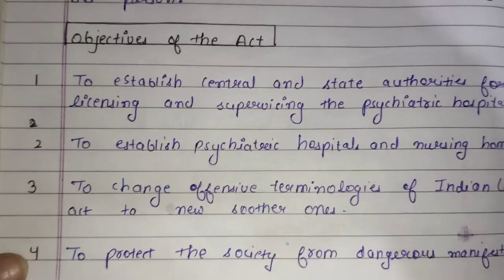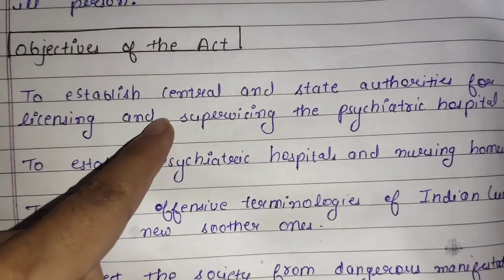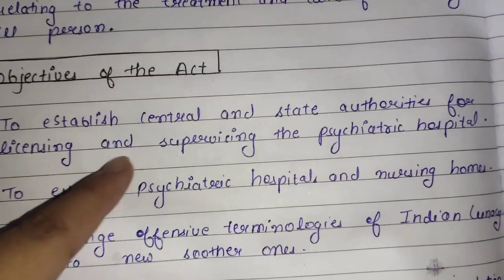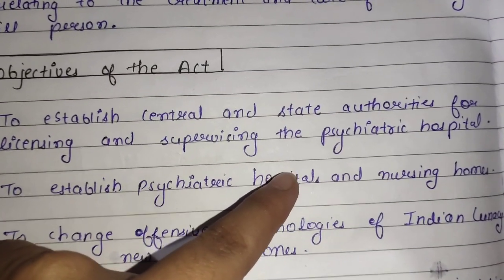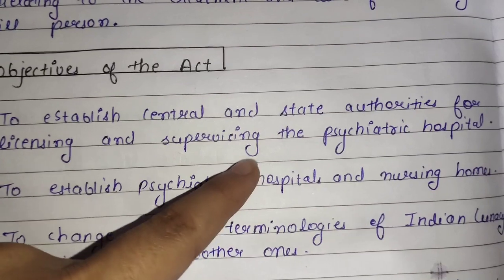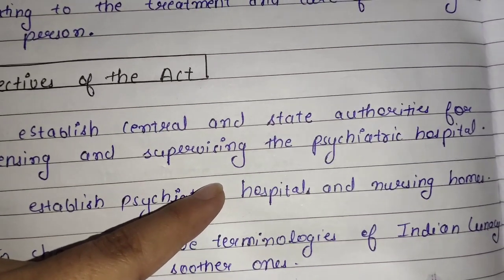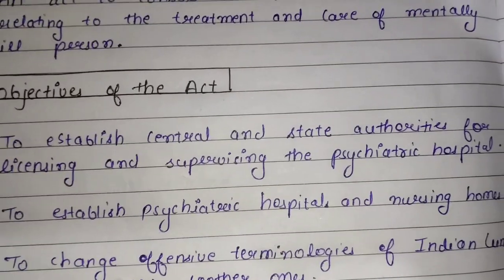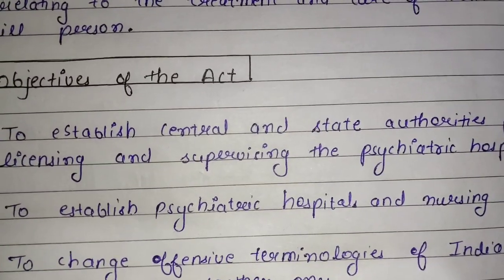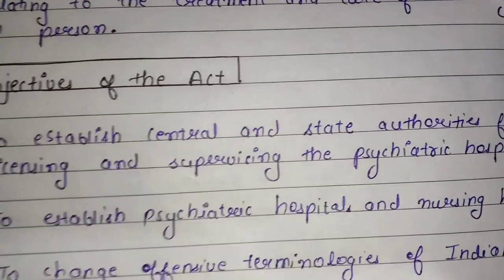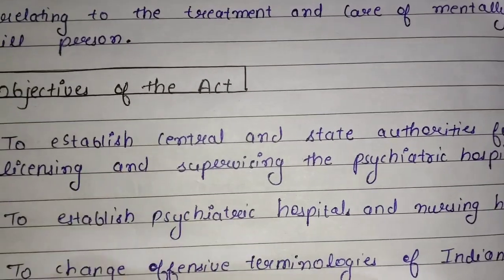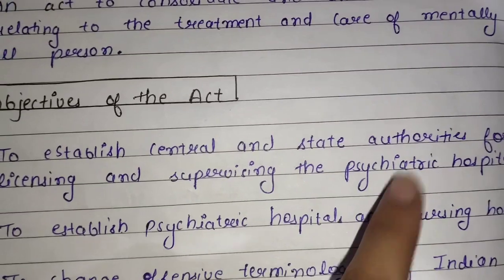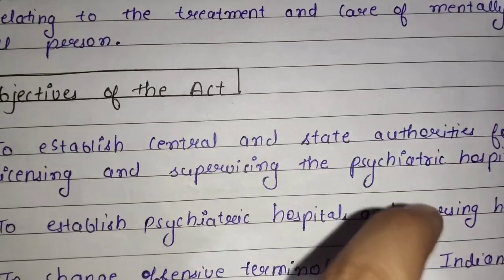The first objective was to establish central and state authorities for licensing and supervising psychiatric hospitals. So the first objective was to establish central and state authorities so that they can supervise and provide licensing to psychiatric hospitals.